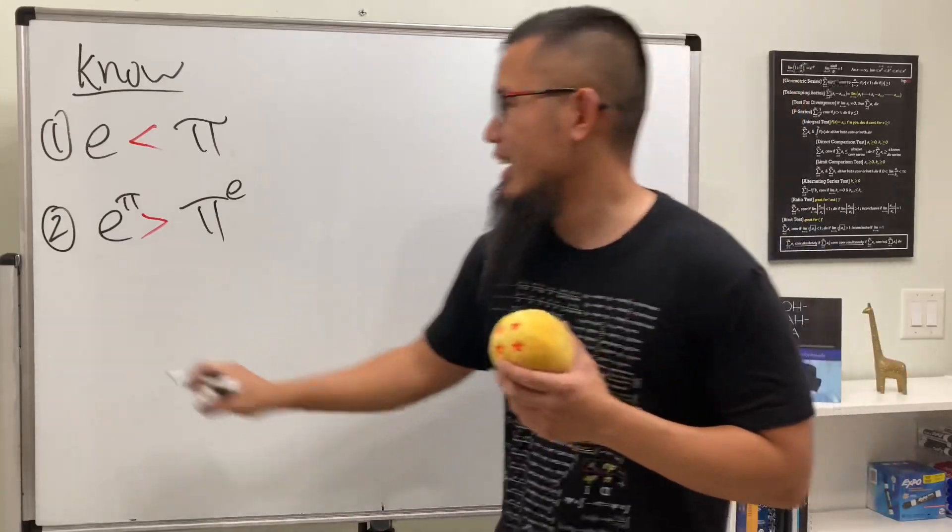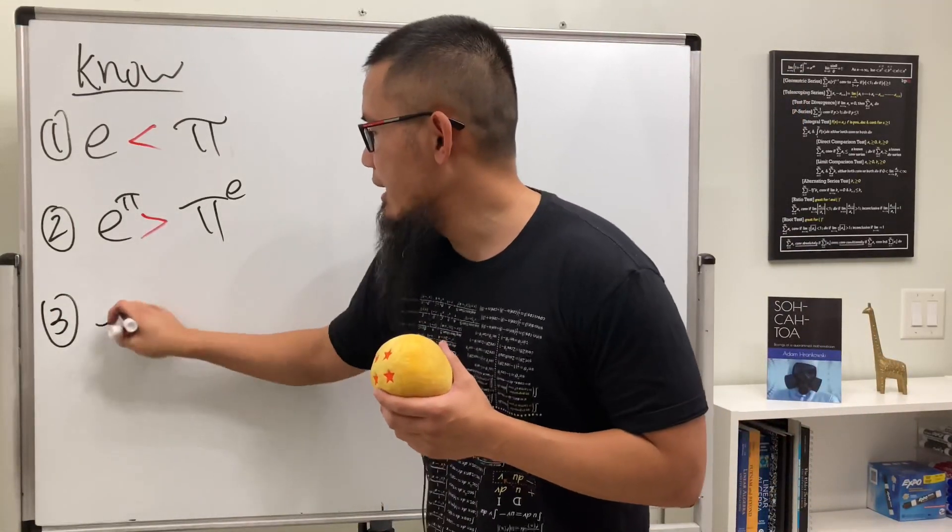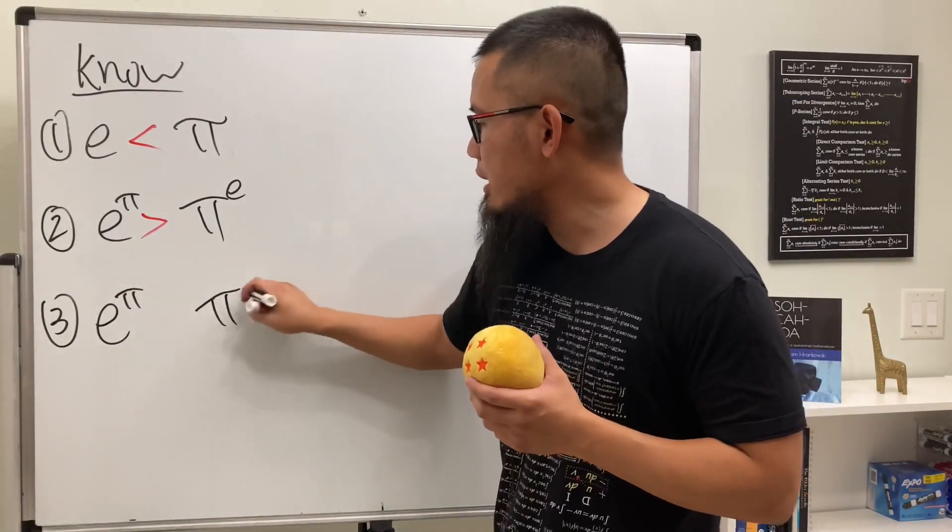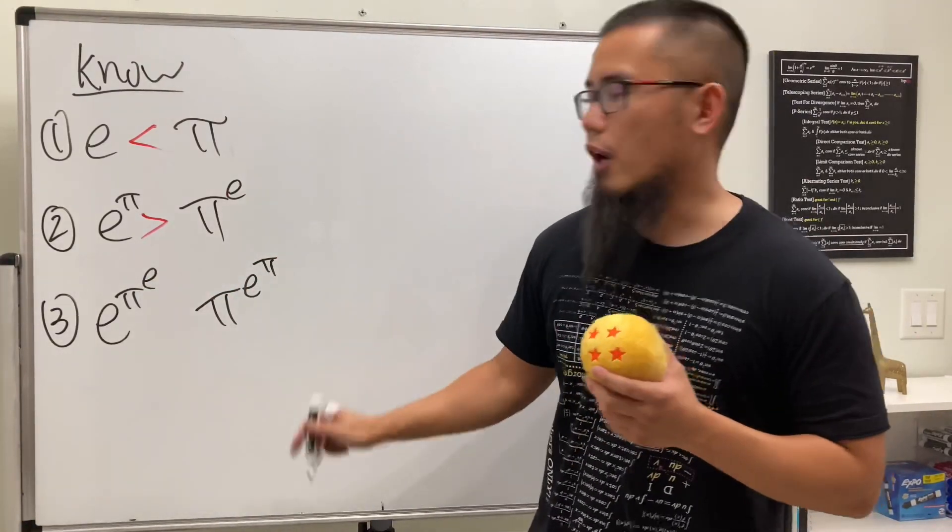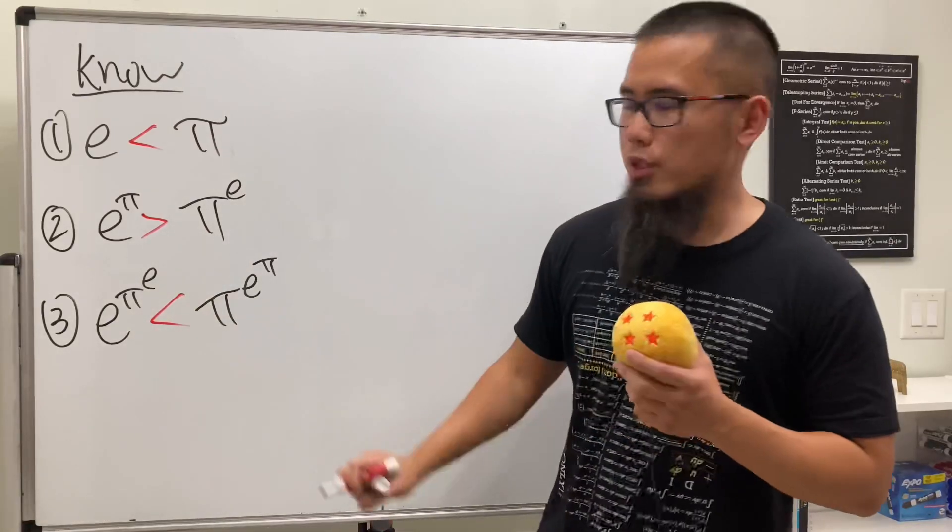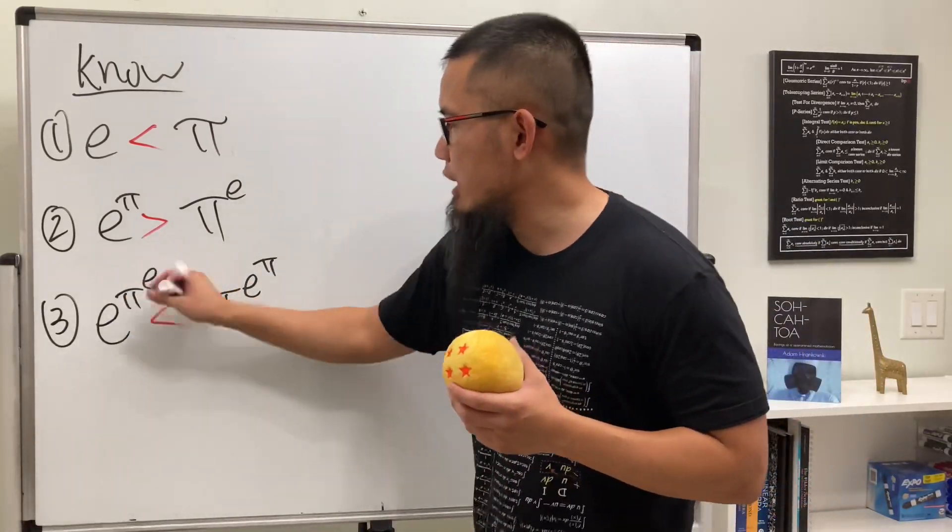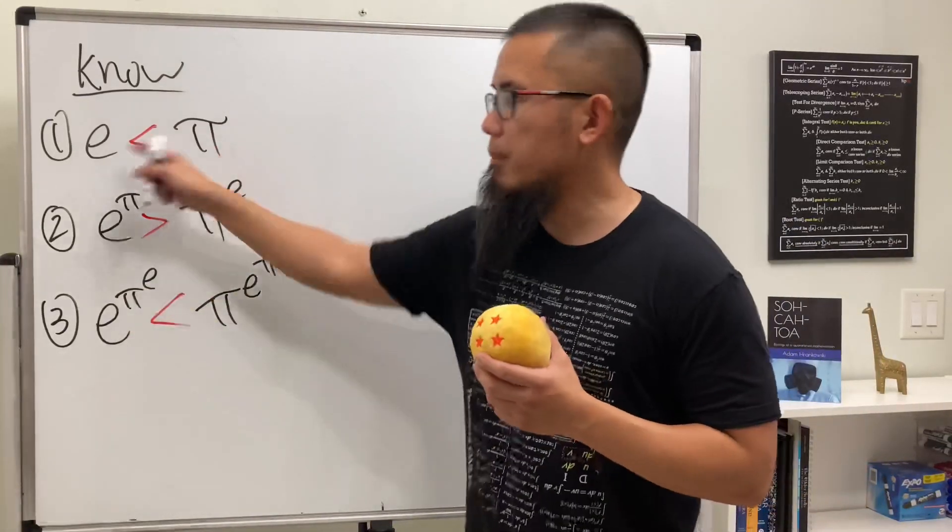And now let's look at number three. Of course e to the π and then π to the e, but I'm going to put another e's power here and another π's power here. Now which one's bigger? Of course this is going to be bigger because we know that e to the π is bigger than π to the e by number two, and then π is bigger than e by number one. So of course this is going to be bigger than that.